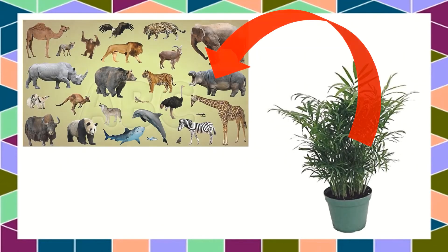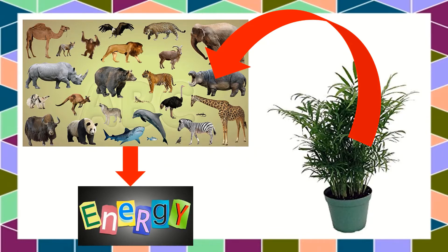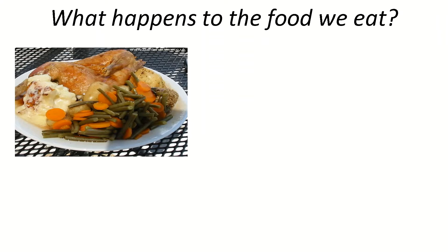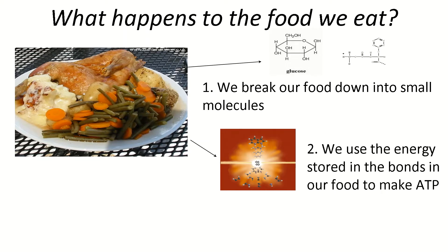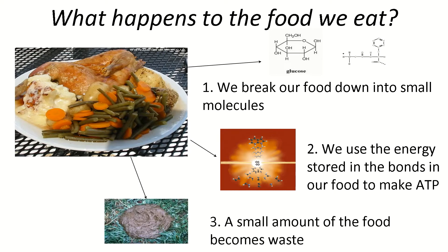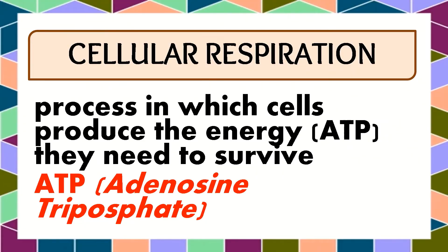Animals eat plants — they are called herbivores — and these plants are converted into energy. Plants get energy from the sunlight. So what happens to the food that we eat? First, we break our food down into small molecules. Then we use the energy stored in our food to make ATP. ATP is the universal energy unit for living organisms. A small amount of the food becomes waste in the form of feces or urine. Cellular respiration is a process in which cells produce the energy called ATP, which is needed in order for us to survive.